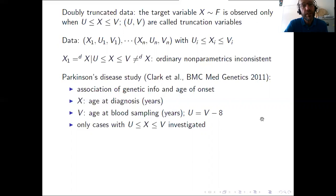So this is my motivating example, this study on Parkinson's disease in which the goal was looking for association between genetic information and the age of onset for Parkinson's. The main variable X is age of diagnosis and the sample of individuals in the study were individuals with a blood sampling to get the genetic information at maximum eight years later than the onset of Parkinson's disease.